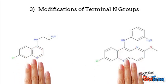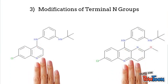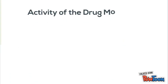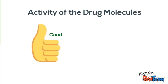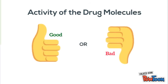And the last one is by using different terminal N groups. All of these modifications that we've done are to see whether they can increase the activity of the drug molecule.